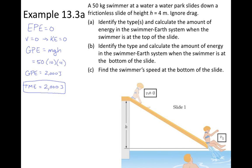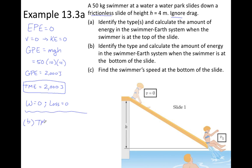As the swimmer moves down the slide, we're ignoring drag, and it is a frictionless slide. There's no force pushing on the swimmer. Therefore work is zero, loss is zero, and therefore the total mechanical energy is going to remain 2000 joules. So at the bottom of the slide, the total mechanical energy still has to be 2000 joules.